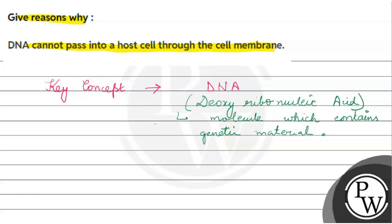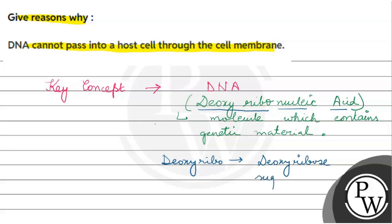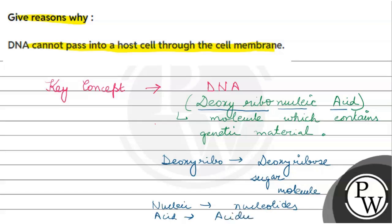DNA consists of sugar — deoxyribose sugar, which is over here. Nucleic means presence of nucleotides, and acid means acidic nature.